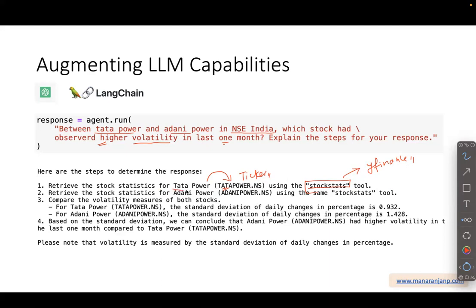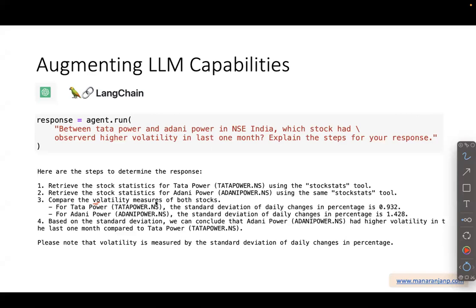The LLM converts the stock name we asked for into the appropriate ticker to bring the right information. It also retrieves statistics for Adani Power using the same tool. It can bring information from both in parallel, which is an interesting aspect of multi-agent developed using Langchain. Once it has statistics for both stocks, it compares the volatility. The LLM already knows from its training that standard deviation denotes volatility. It finds standard deviation for Tata Power is 0.92 and Adani Power is about 1.4, and concludes that Adani Power had higher volatility in the last one month.